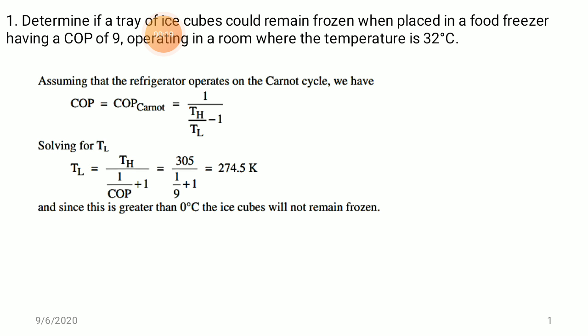Determine if a tray of ice cubes could remain frozen when placed in a food freezer having a COP of 9, operating in a room where the temperature is 32°C, assuming that the refrigerator operates on a Carnot cycle. We had already studied the COP of the Carnot cycle.